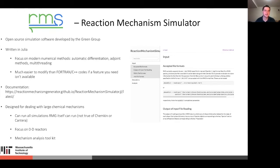The documentation is available at the web address shown. In general, RMS is designed for dealing with large chemical mechanisms efficiently. It can run all the simulations RMG itself can run. It has an emphasis on 0D reactors, although it can do some connected reactors, and also a large focus on mechanism analysis.